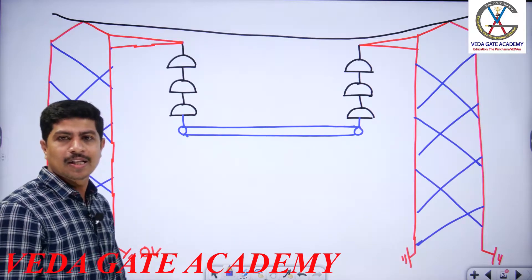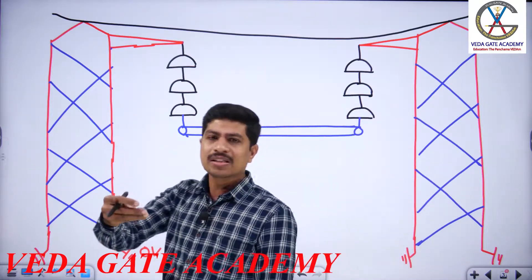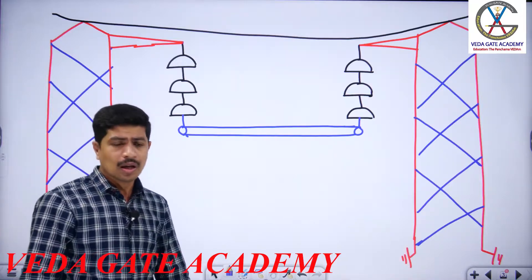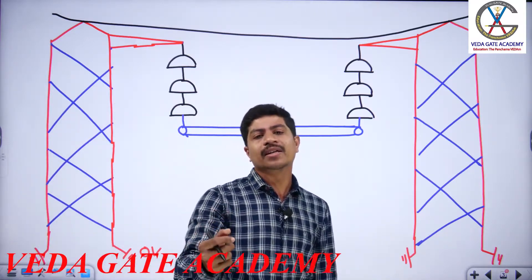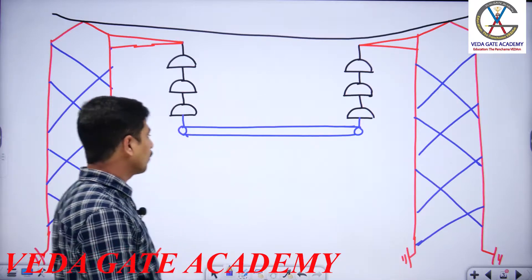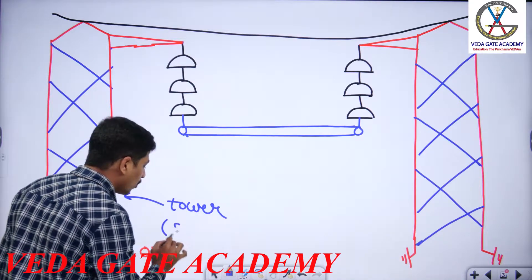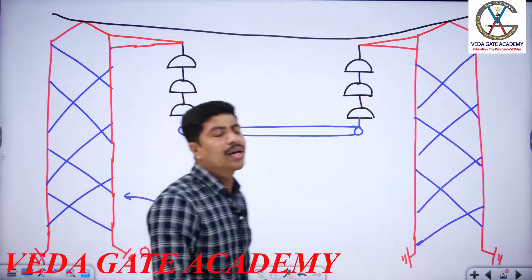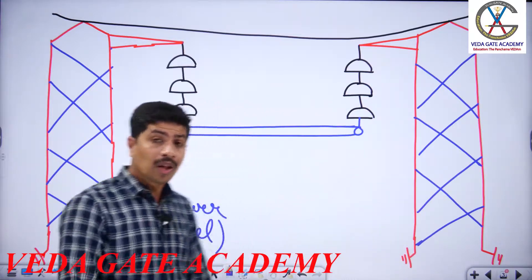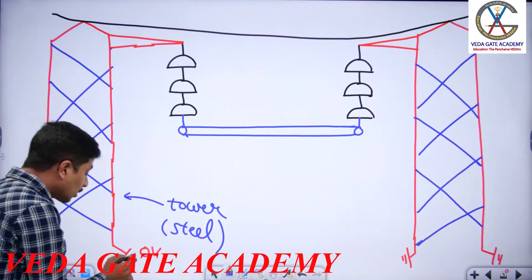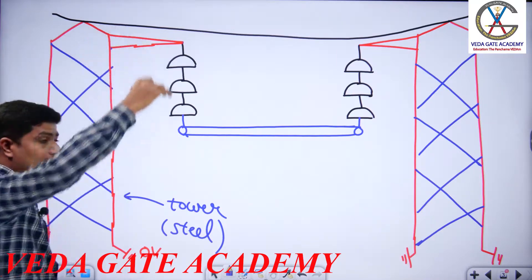This is the typical practical transmission network. For the purpose of simplicity, I have taken only two towers. The number of towers depends on the distance of transmission. This is called a transmission tower, made up of galvanized steel — not iron, because iron has the problem of corrosion. This tower is placed on earth, and the earth or ground voltage is zero. Therefore the potential at any point on this transmission tower is going to be zero.